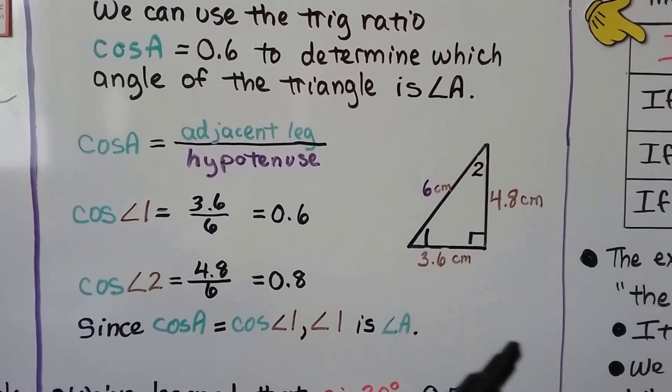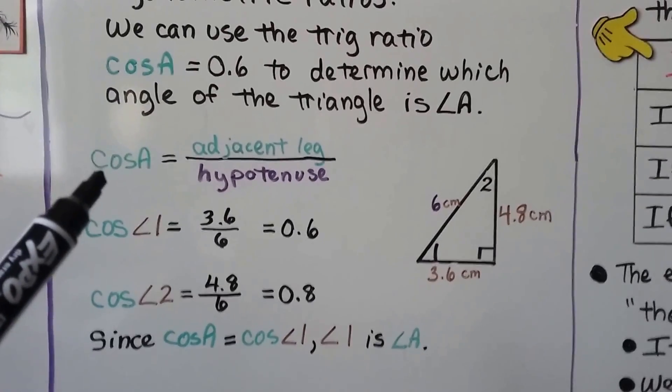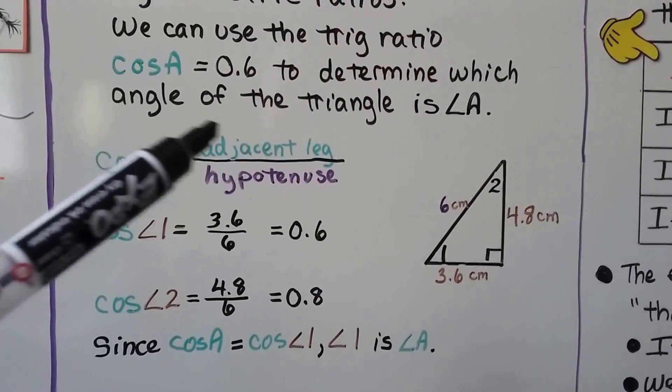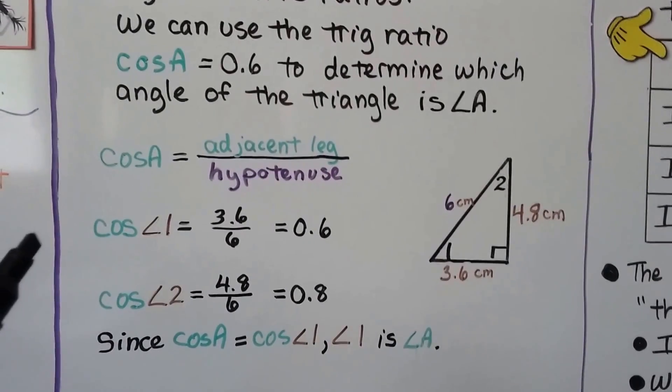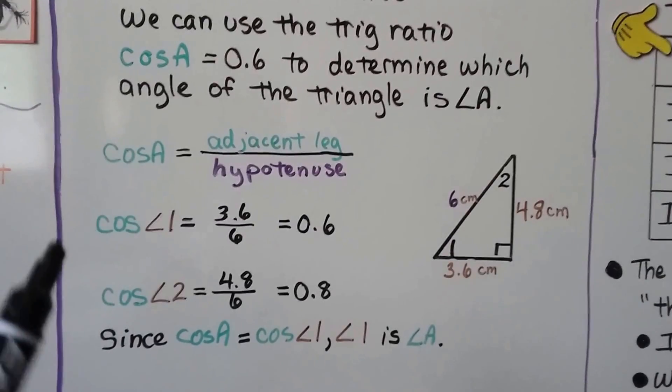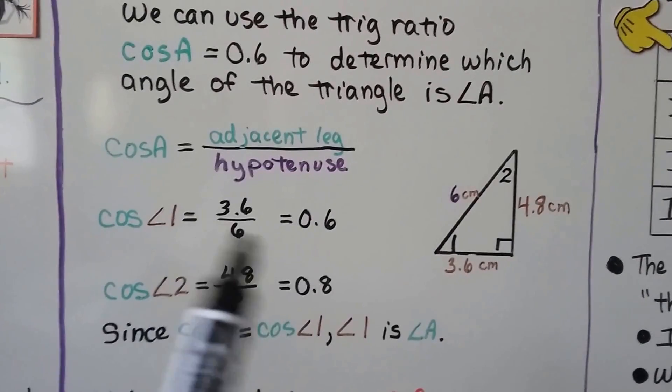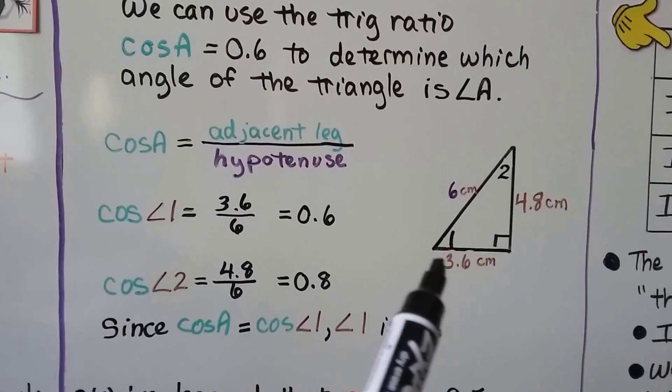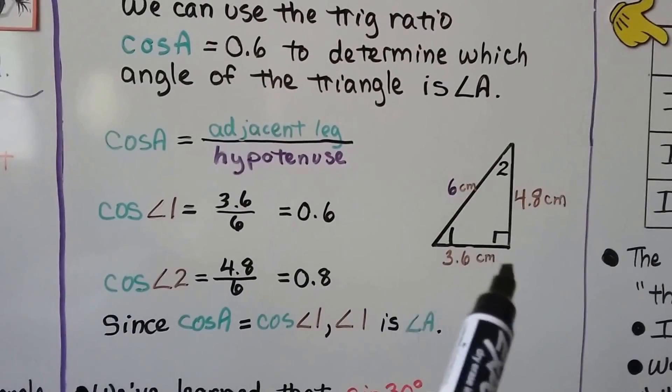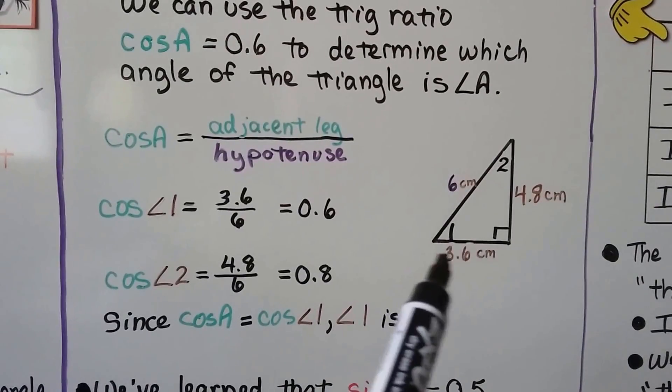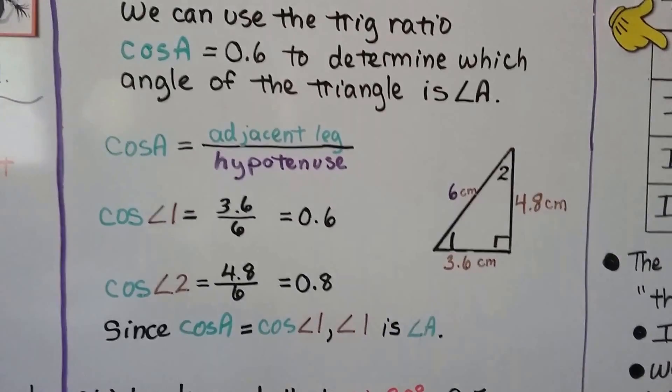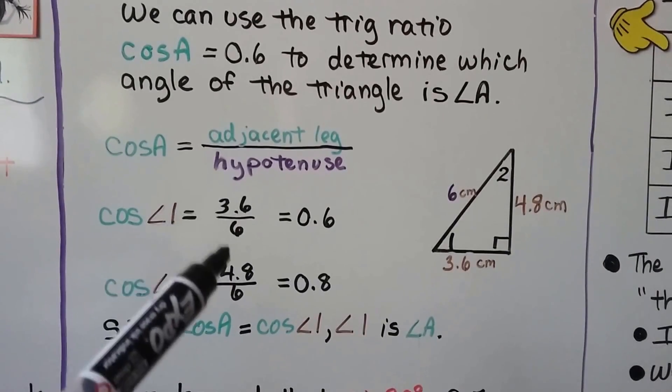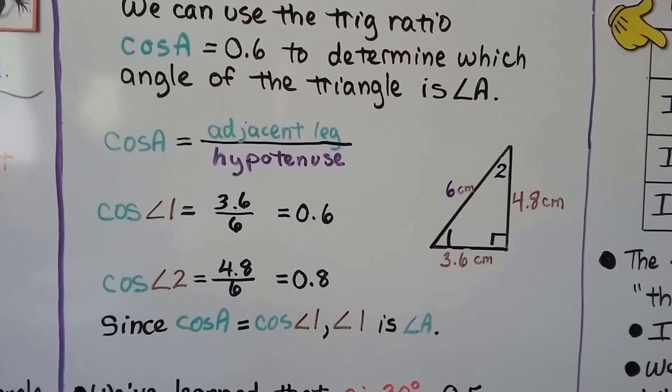To find angle a, we know the cosine would be the adjacent leg over the hypotenuse. So the cosine of a, we would use an adjacent leg. If it was for angle 1, we would put the adjacent leg to angle 1, which is 3.6, over the 6 centimeter hypotenuse. When we divide, we find out it is 0.6.